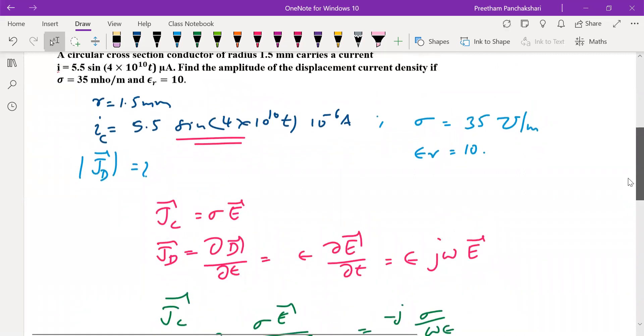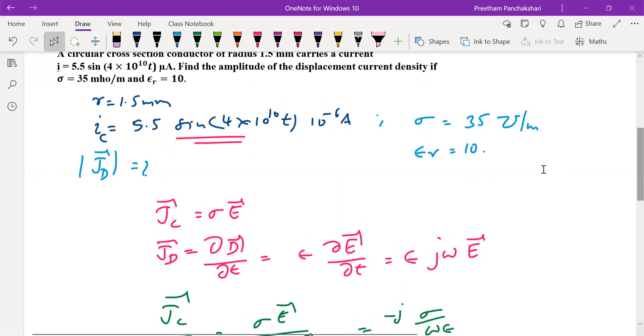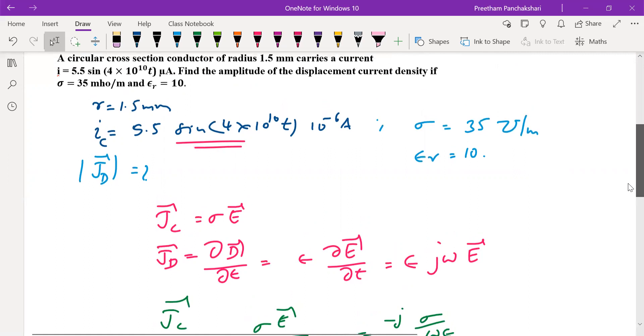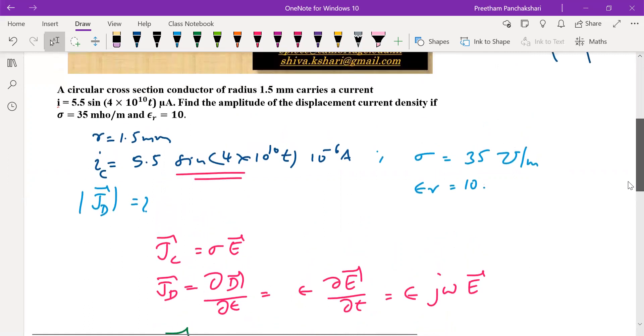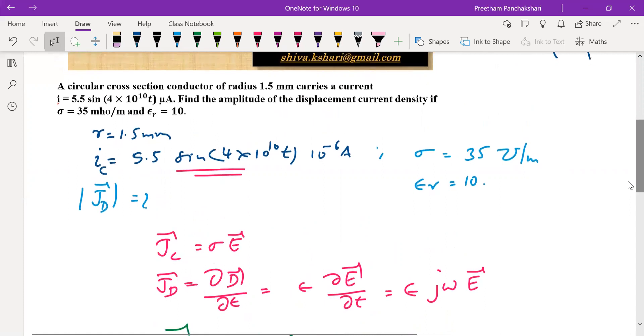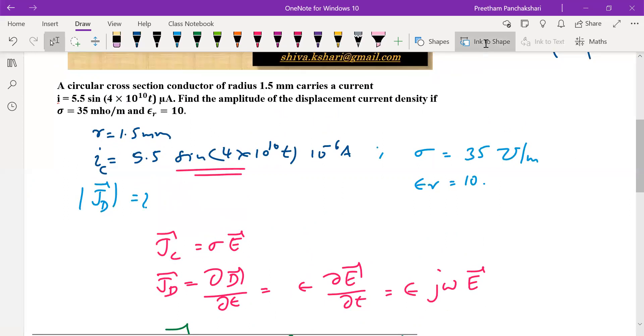5.5 sin, I'm correct, it's correct. So i is correct. Look at the area now. The circular area of cross-section is given by this radius, radius is 1.5 millimeter.